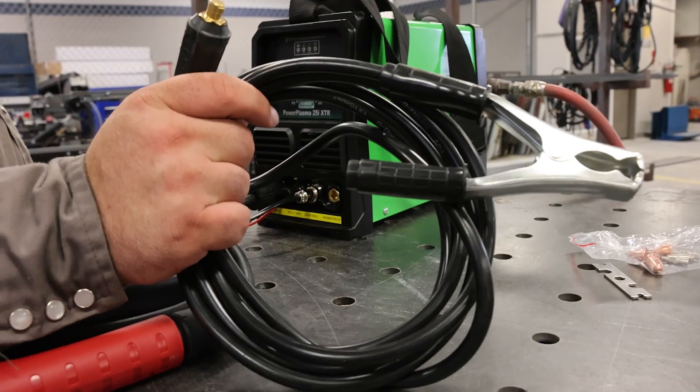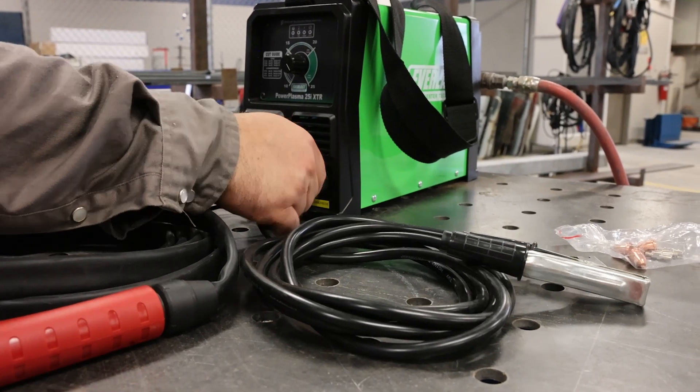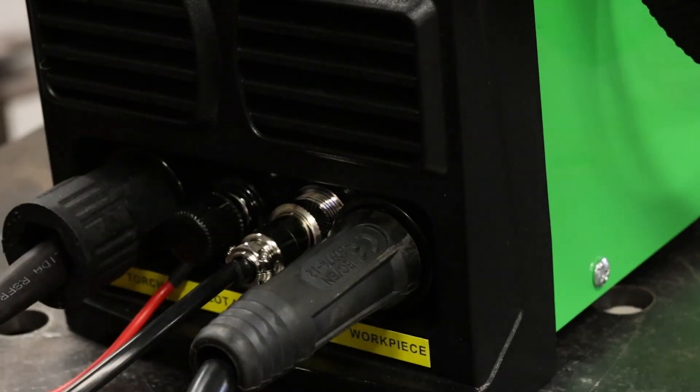Next thing we're going to do is we're going to hook up the workpiece clamp. Just like any Dinse connector, you're going to push it in, half turn until it's tight.